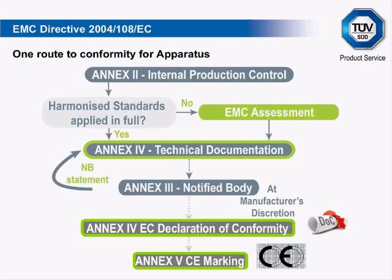Under the latest edition of the EMC directive, there is one route to conformity named Internal Production Control Leading to Self-Declaration. It covers internal design and production control, and does not require a notified body, though manufacturers may elect to follow the notified body procedure in Annex 3. The notified body function effectively replaces the competent body function under the old directive, but use of a notified body is now optional. All manufacturers must now create technical documentation and perform an EMC assessment, similar in function to the old technical construction file.